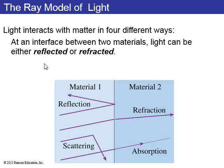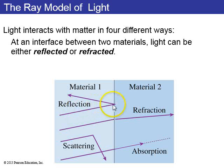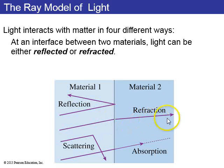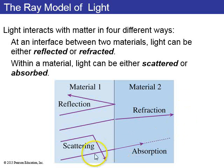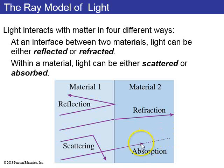Light rays interact with matter in four ways. If there's an interface between two materials with different indices of refraction, then the light ray can either be reflected — bouncing back into the first material — or refracted, meaning transmitted into the second material. Also, just within a material, a light ray can be scattered, which means it suddenly changes direction, or it can be absorbed, meaning its energy gets sucked into the material.